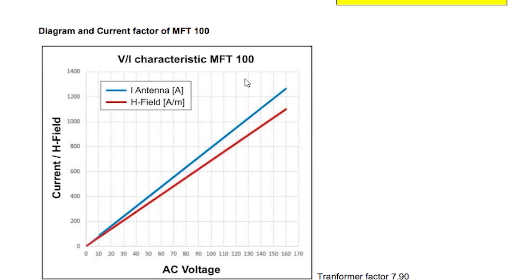Now looking just below that we have a graph reflecting the H field and AC voltage levels for both the antenna and the corresponding H field. This is particularly useful when you're looking to determine what the input voltage needs to be to achieve a certain field level.